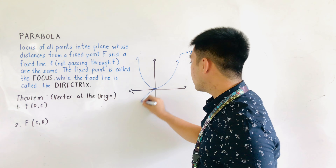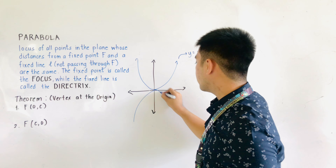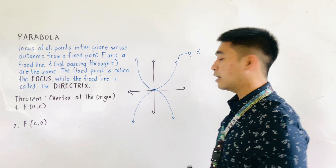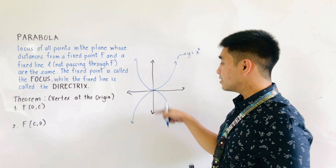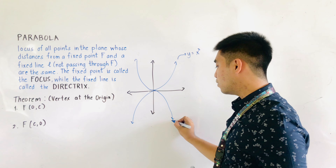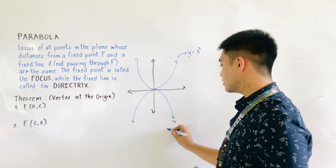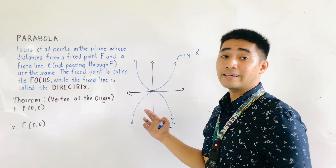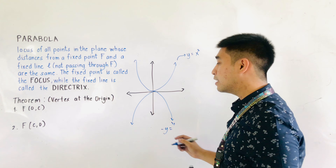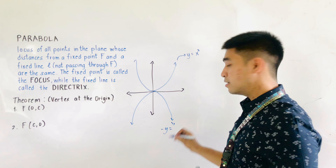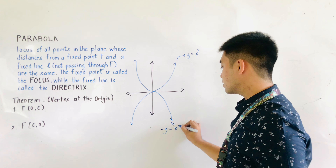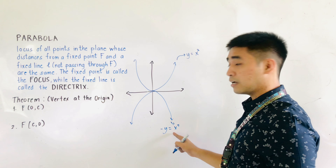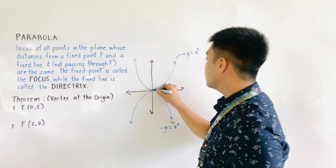This is now the parabola opening downward. If this is a parabola opening downward, this is a negative y. Therefore, this is negative y is equal to x squared, since we have two values of x. This is the equation of the parabola opening downward.